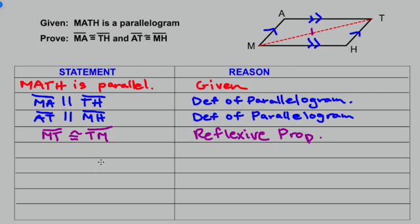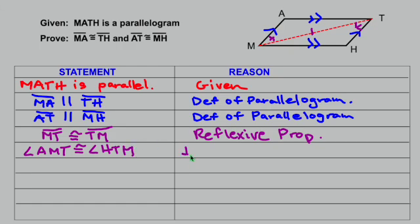Next up, let's look at some angles. If we take the sides on the left and right with M-T as a transversal, the angle at A-M-T and the angle at H-T-M would be considered alternate interior angles. Because these lines are parallel, those alternate interior angles are congruent. So angle A-M-T is congruent to angle H-T-M — reason: if lines are parallel, then alternate interior angles are congruent.